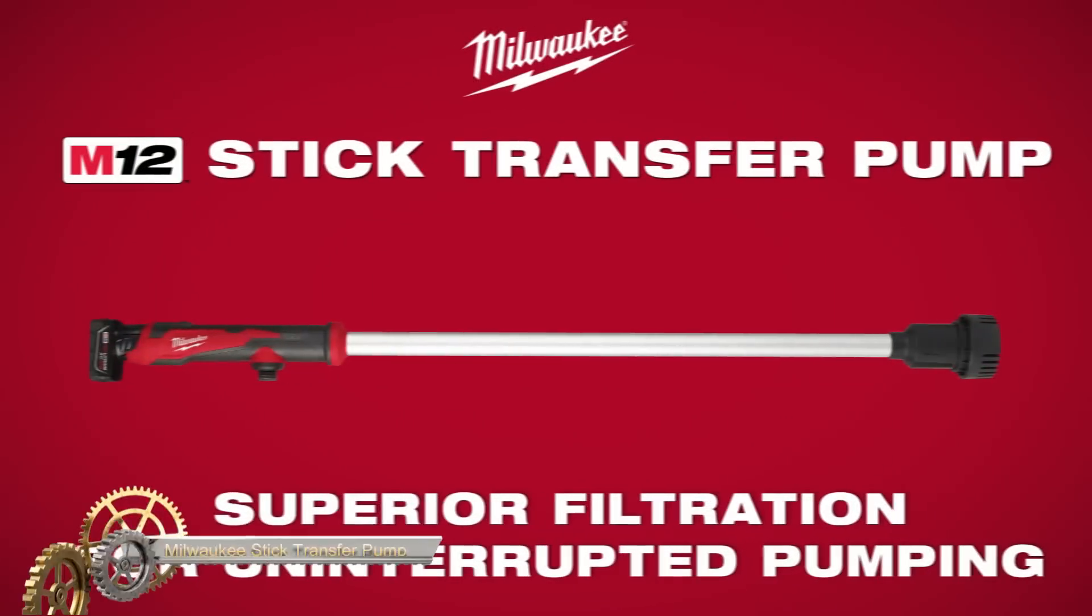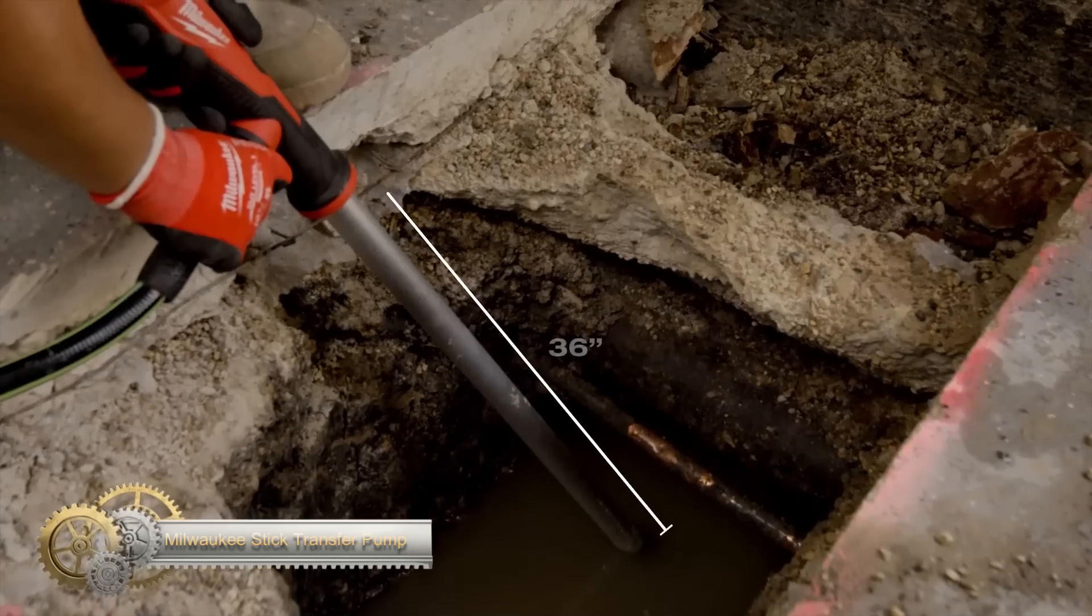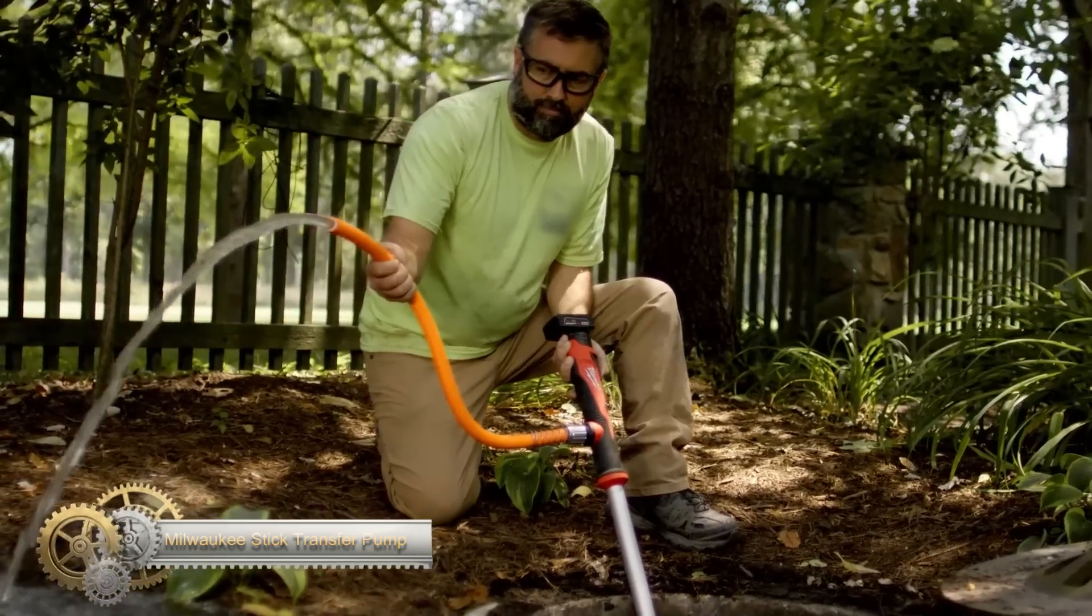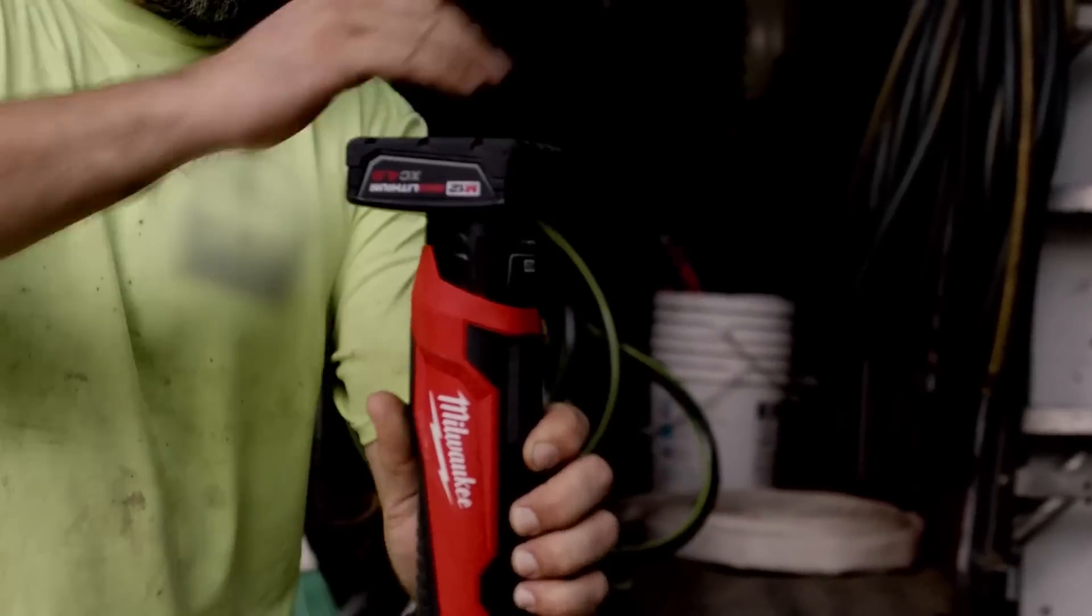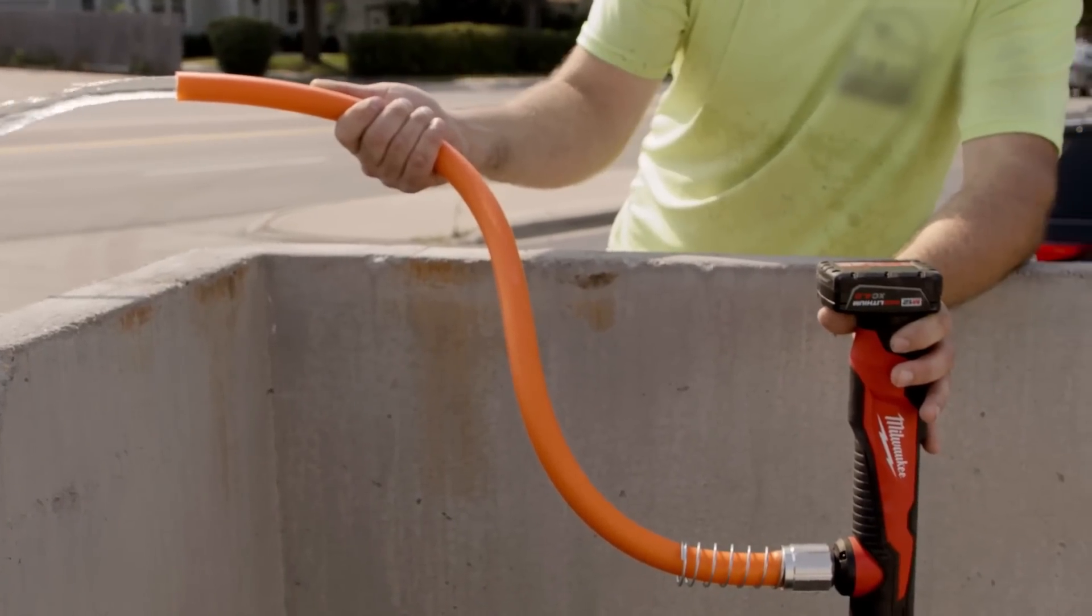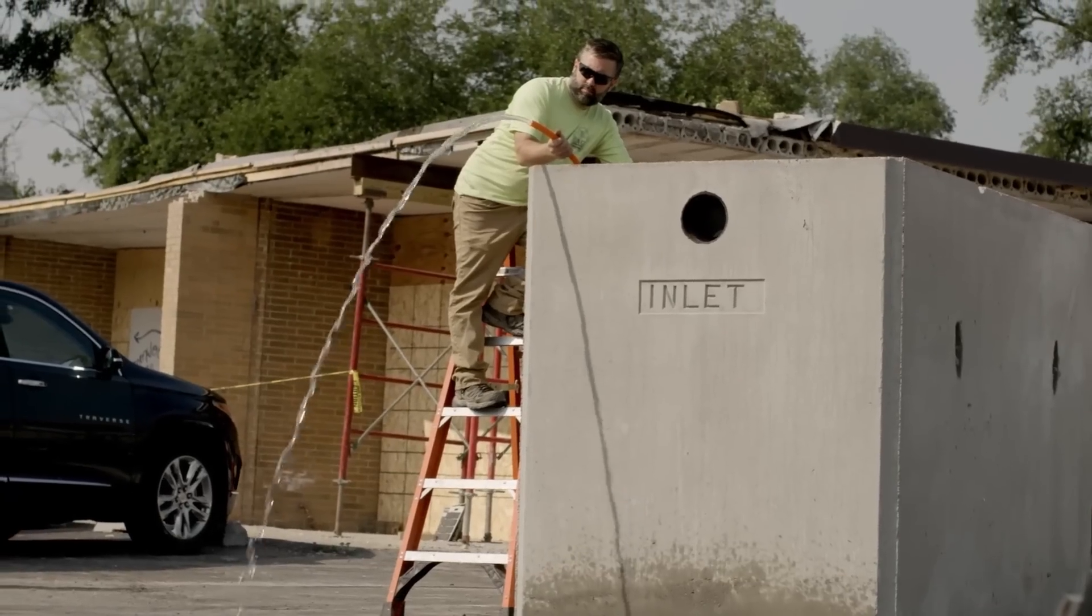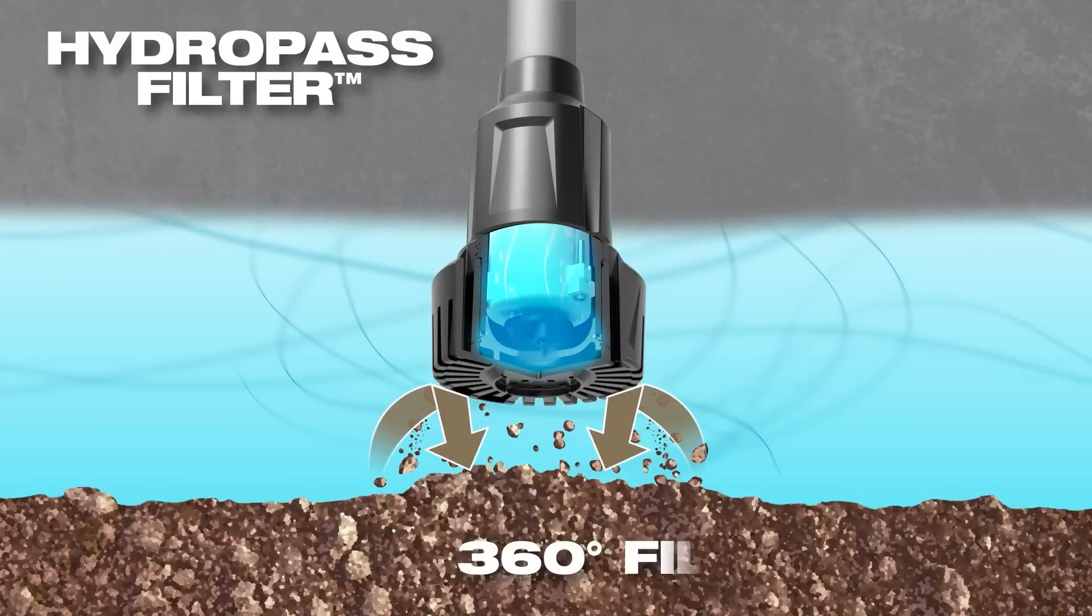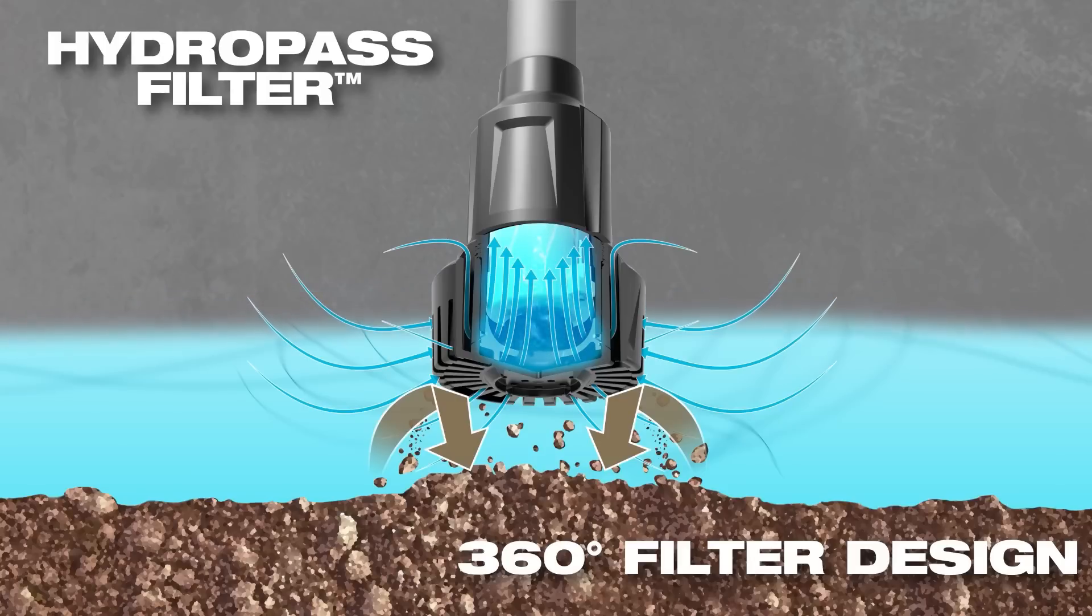The Milwaukee M12 Stick Transfer Pump is the ultimate tool for uninterrupted pumping in hard-to-reach areas. With a 36 inch submersible aluminum barrel, hydro pus filter technology, and an M12 battery platform, this pump maximizes flow in heavy debris and eliminates repetitive manual pumping. Its 15 feet max head height and compatible outlet make it easy to push water farther, making traditional water transfer methods a thing of the past.